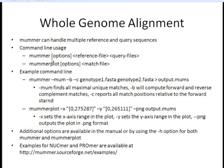This is the basic command line that you would use. You put MUMmer, whatever options you want to give it, your reference sequence, and the query sequence. And then to generate the plot, you'll do MUMmer plot, your options, and then the match file, which is going to be the output from the previous MUMmer command.